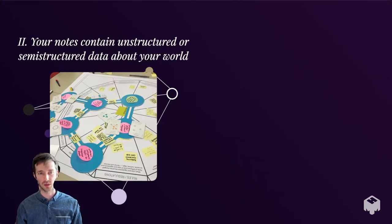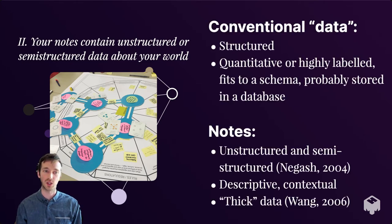All of those notes you've taken actually contain unstructured or semi-structured data about your world. That's right, data. Conventionally we think of data as structured, usually quantitative, highly labeled or fit to a schema. Notes, on the other hand, are unstructured or semi-structured data. They're descriptive, contextual. We can tell what they are by where they are or how they're organized. They might be thought of as thick or personalized, qualitative information about the world.